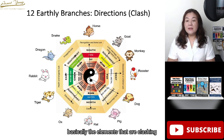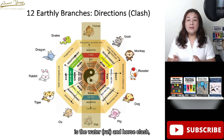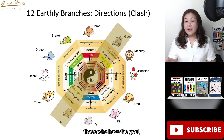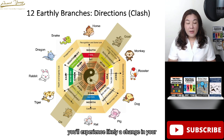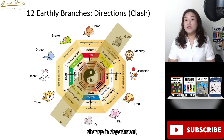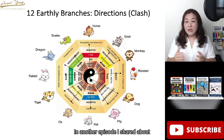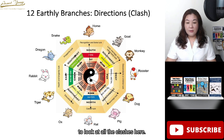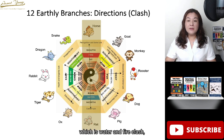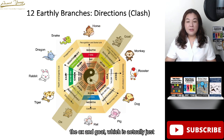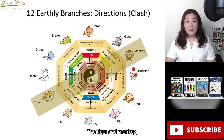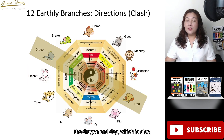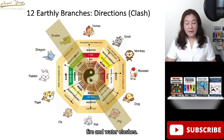Placing the 12 animal branches within their directions, the elements that clash are: rat and horse (water and fire clash), ox and goat (earth clash), tiger and monkey (wood and metal clash), rabbit and rooster (wood and metal clash), dragon and dog (earth-earth clash), and snake and pig (fire and water clash). So for this year, the year of the ox, those who have the goat — especially in the month branch — will likely experience a change in career, boss, department, or thinking and mindset.